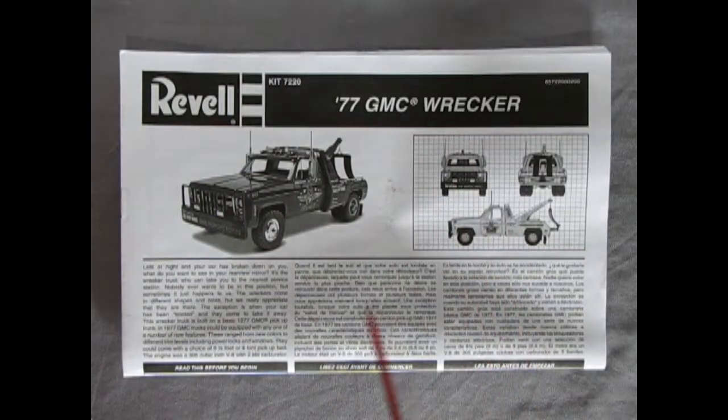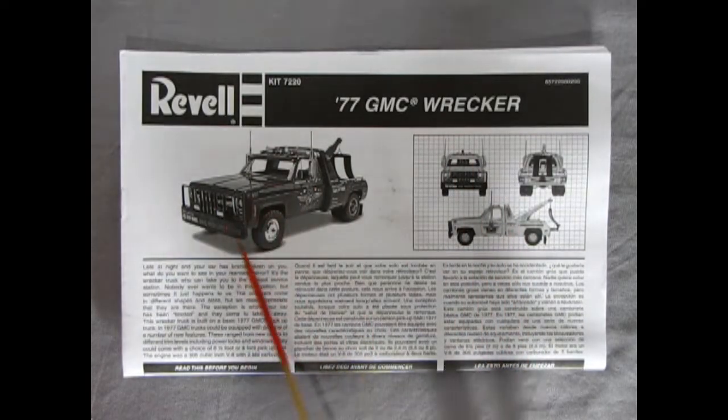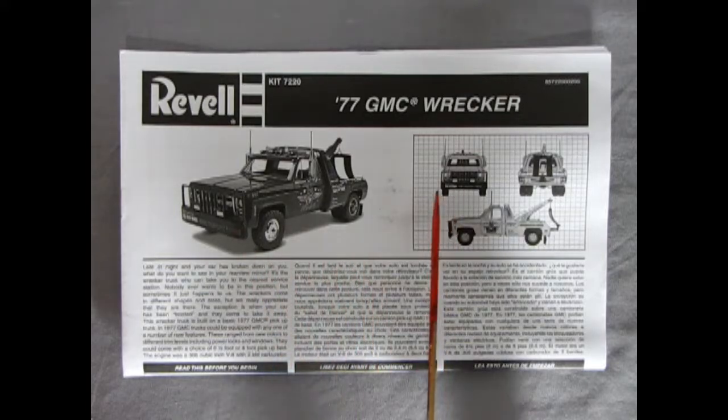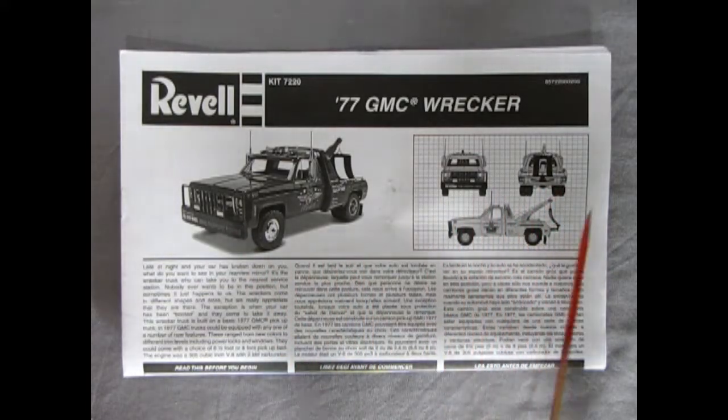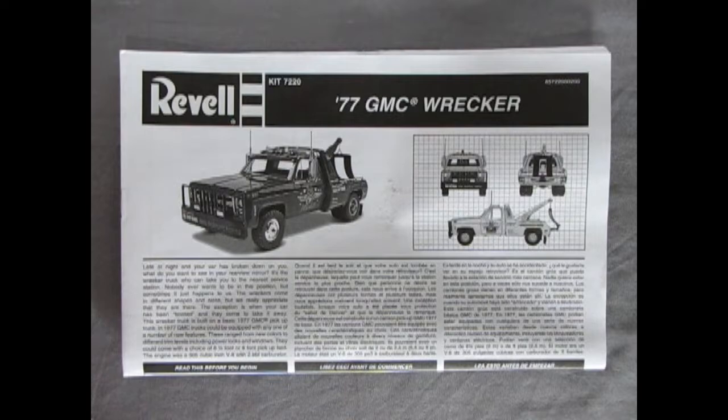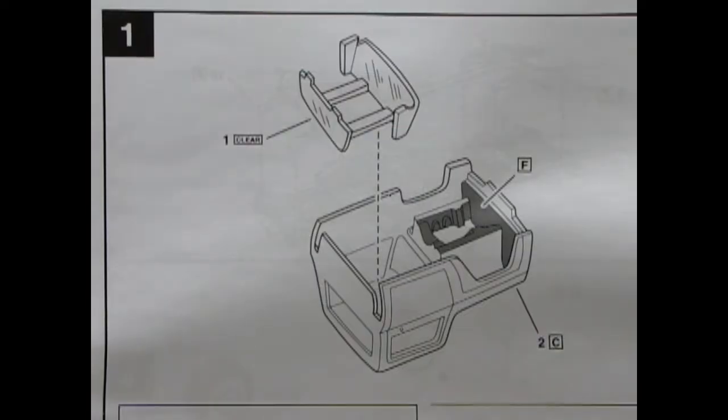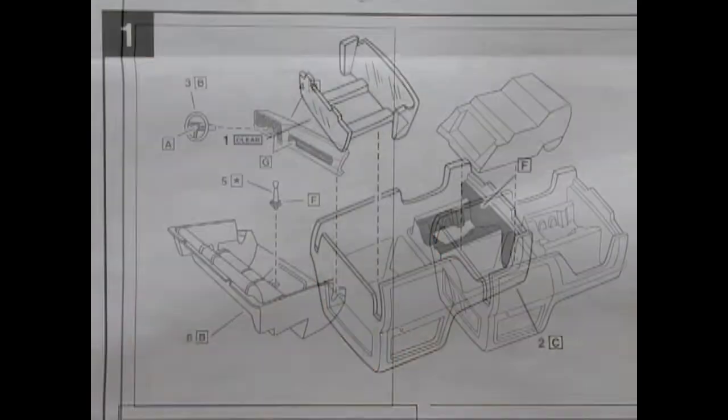Here we have our instruction sheet. You can see we've got the nice build up of the model in black and white, as well as the front, rear and side view blueprint style on the side. Step one shows our cab getting the inside painted with some semi-gloss black and then our glass going in the top. The next two panels show the interior bucket with the center gear shift, dashboard and steering wheel with column all being glued together and painted, and then that component gets dropped into our cab.